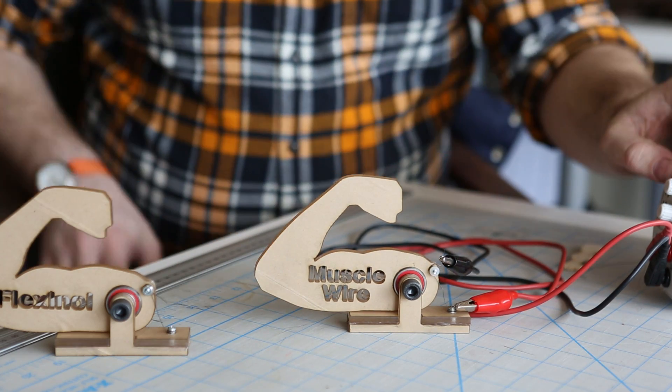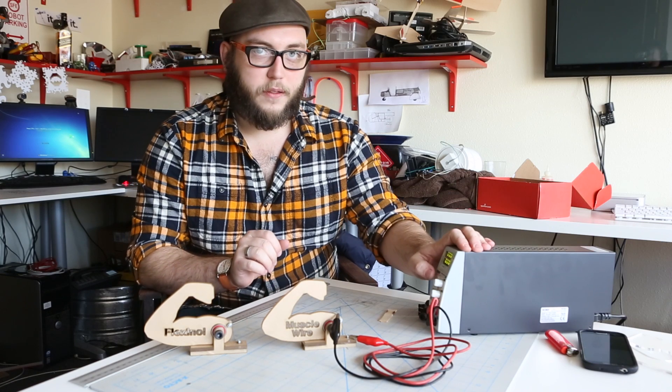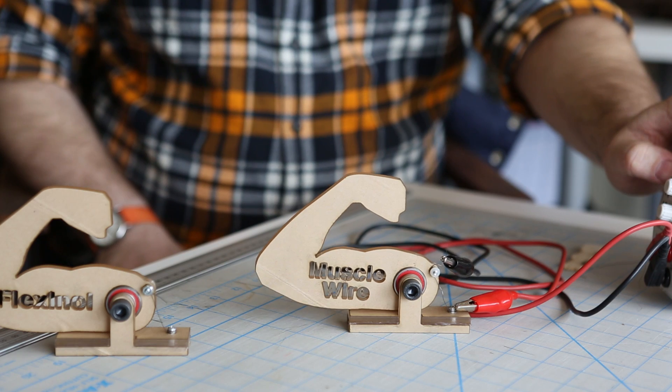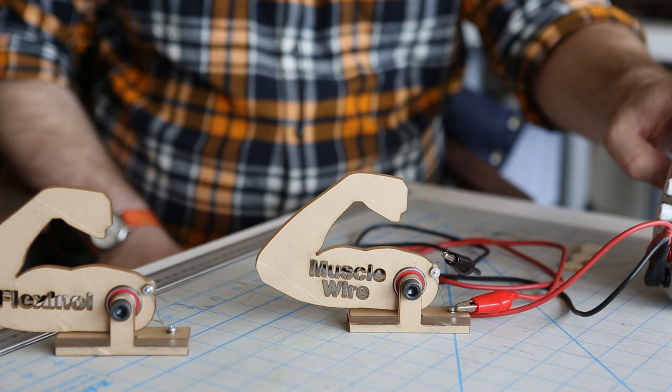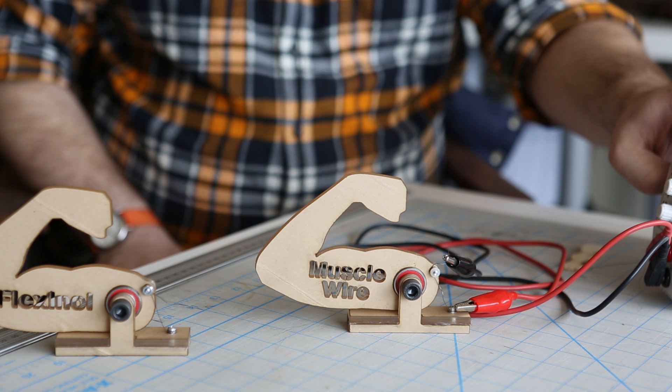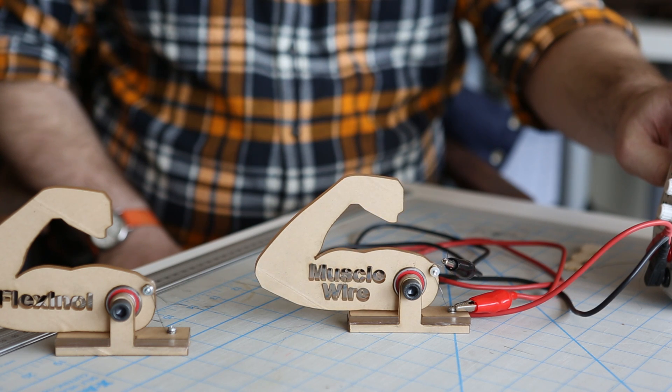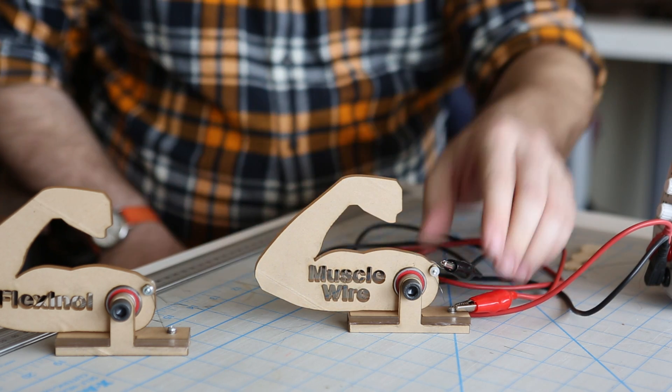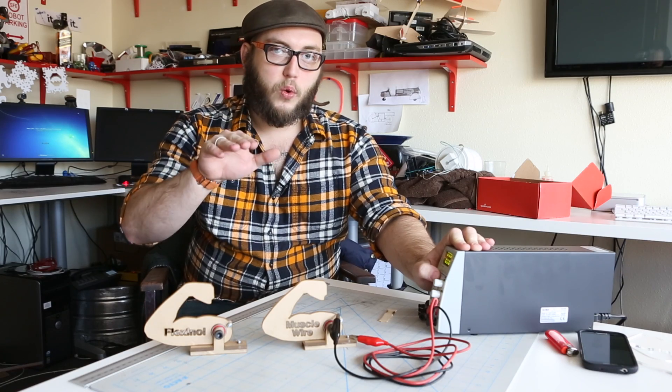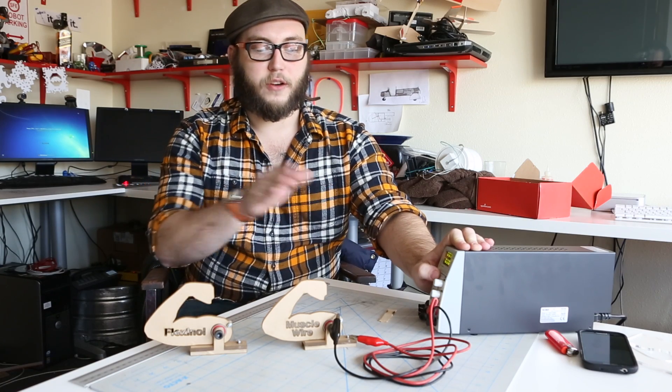We'll start by connecting the muscle wire. What I'm going to do is just turn on the voltage source and this wire will heat up and you'll see this little muscle wire arm jump up and then I'll turn the power source off and you'll be able to see it'll come back down very slowly because the wire actually has to cool off in order to stretch back out.